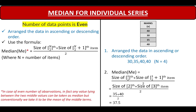Let us see this with an example. Here you will see a column consisting of marks obtained by students. First, we arrange the data in ascending order: 30, 35, 40, 40. Here N equals 4, so the median will be the size of the 2nd item and size of the 3rd item divided by 2. The second item is 35 and the third item is 40, so it is 35 plus 40 divided by 2, which is 37.5. So the median is 37.5 marks.